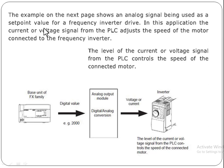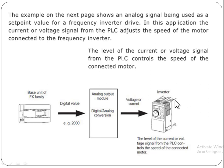An example shows an analog signal being used as a set point value for a frequency inverter drive. The analog signal from the PLC is used to control the speed of the inverter and the motor connected to it. The current or voltage signal from the PLC adjusts the speed of the motor connected to the frequency inverter, with the level of the signal controlling the motor speed.